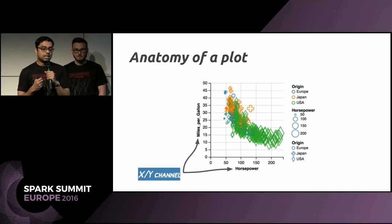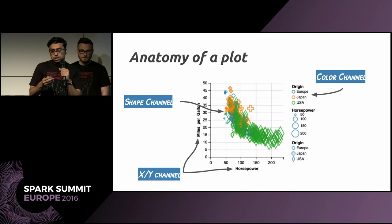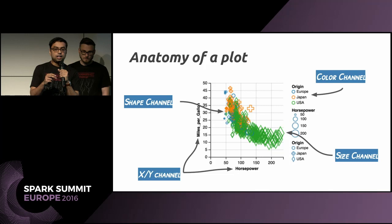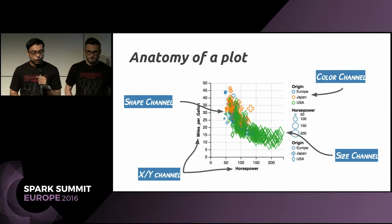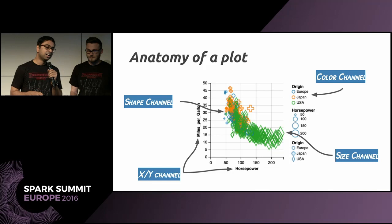If you have another aspect of the data, you could visualise it too by varying the shape. Here we're reusing horsepower, mapping it to the size of the data point — there's a size channel as well. All these things are done by writing maybe six lines of code. That's the introduction and conceptual part of the Vegas tool, and now I'll hand it over to Ash to go through the more nitty-gritty details and illustrative examples.